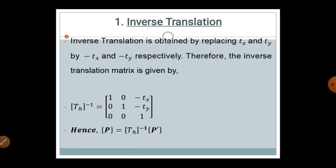Now, how can this be represented in mathematical formulation? Moving to the next slide for inverse translation: the inverse translation is obtained by replacing TX and TY by minus TX and minus TY. If the point is moving in the positive direction, the inverse moves it in the negative direction — giving minus TX and minus TY.